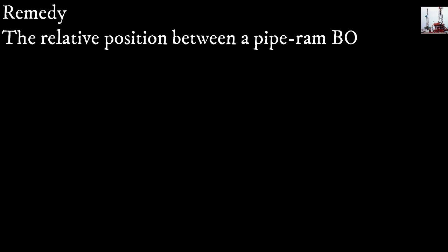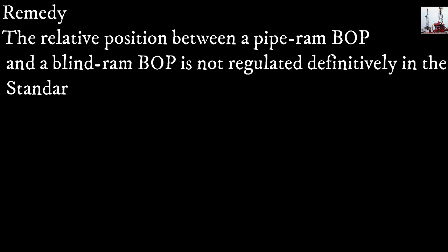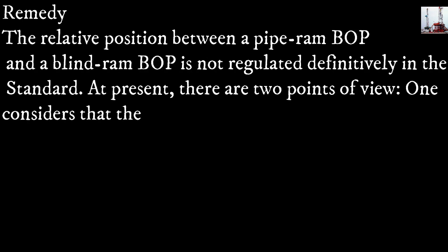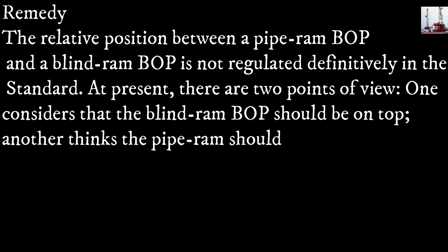Remedy: The relative position between a pipe ram BOP and a blind ram blowout preventer is not regulated definitively in the standard. At present, there are two points of view: one considers that the blind ram blowout preventer should be on top; another thinks the pipe ram should be on top.